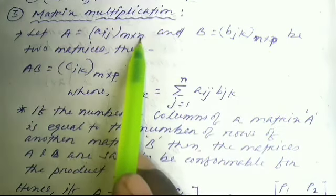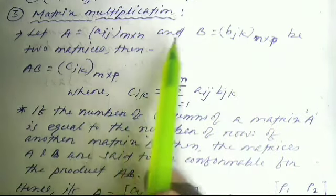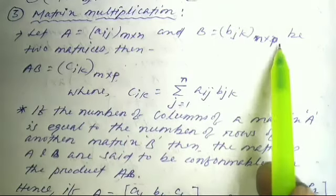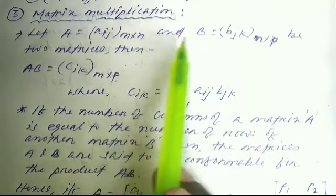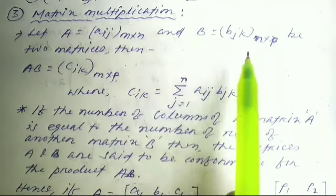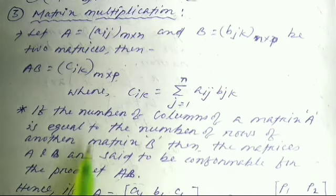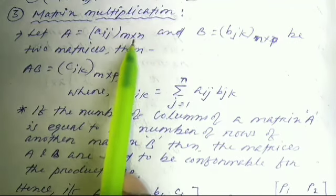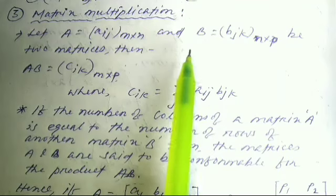If the number of columns of matrix A equals the number of rows of matrix B, then the matrices A and B are said to be conformable for the product A·B. The resulting matrix has order M×P — using the first and last dimensions. If the column count of A does not equal the row count of B, multiplication cannot be performed.